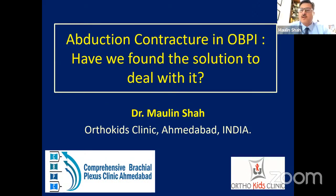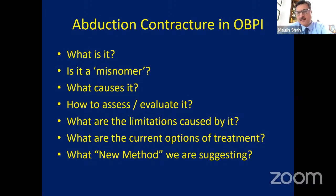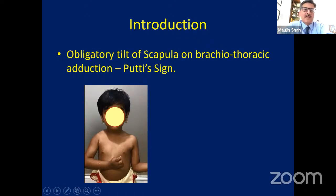Let me take you through this novel concept. You all know abduction contracture is a common occurrence in brachial plexus palsy. I'll talk about: what is it, is it a misnomer, what causes it, how to assess it, what are the limitations, what are the current options, and what new method I'm proposing today. What is Patti's sign or abduction contracture? It is an obligatory tilt of the scapula on brachiothoracic abduction, known as Patti's sign.